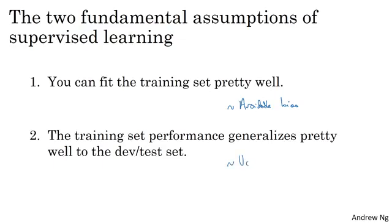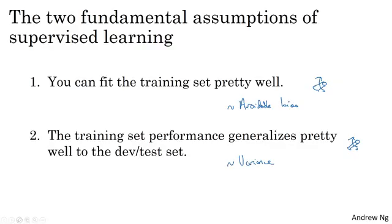In the spirit of orthogonalization, there's a certain set of knobs you can use to fix avoidable bias issues, such as training a bigger network or training longer. And there's a separate set of things you can use to address variance problems, such as regularization or getting more training data.